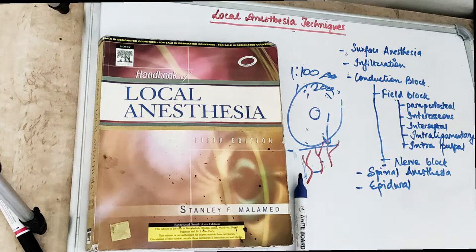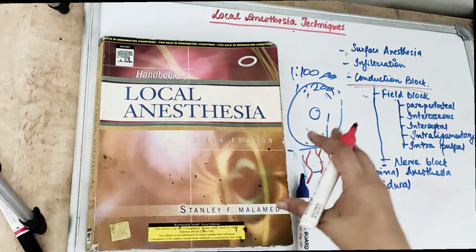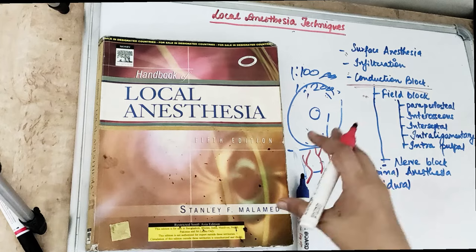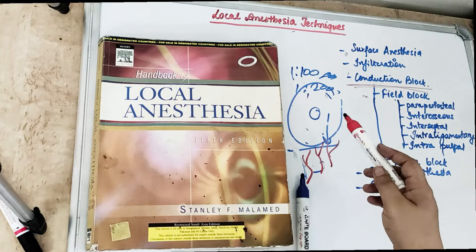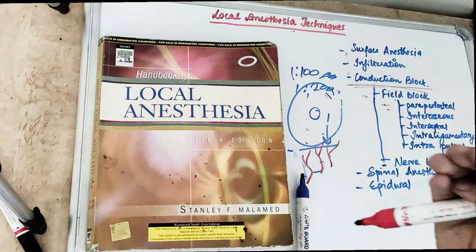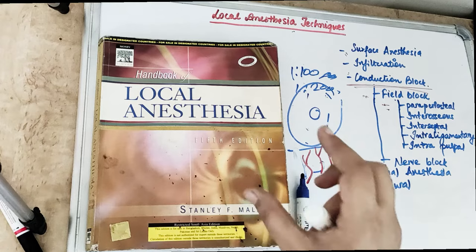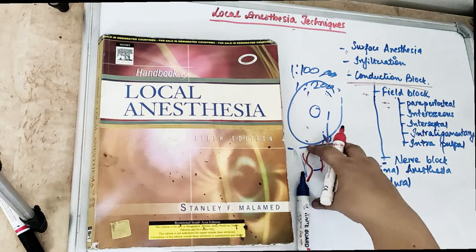Then we have the conduction block, which blocks the whole nerve trunk. We are injecting into the nerve trunk, so the entire area distal to the injection site is anesthetized — all branches of that nerve get anesthetized. The field block is where we give LA injected subcutaneously, blocking the whole field. Unlike infiltration, which anesthetizes only the terminal branches, the field block anesthetizes large terminal branches.